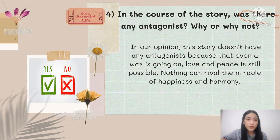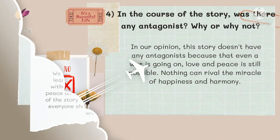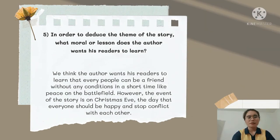It is still possible that nothing can revive the miracle of happiness and harmony. For Question 5, what moral or lesson does the author want his reader to learn? Our answer is: we think the author wants his reader to learn that every person can be a friend without any condition, in a short time, like peace on the battlefield. However, the events of the story take place on Christmas Eve, the day that everyone should be happy and avoid conflict with each other.